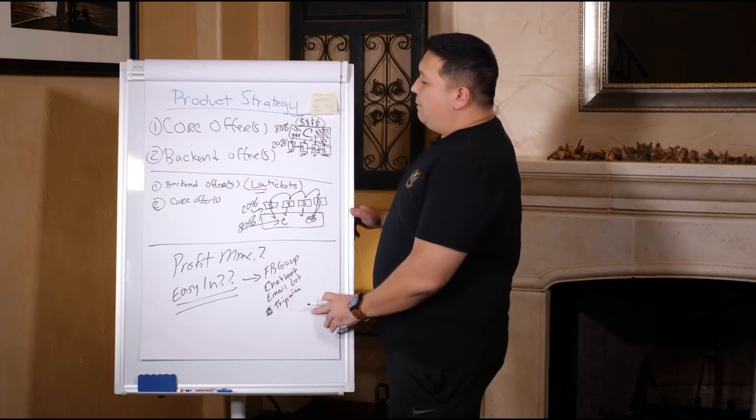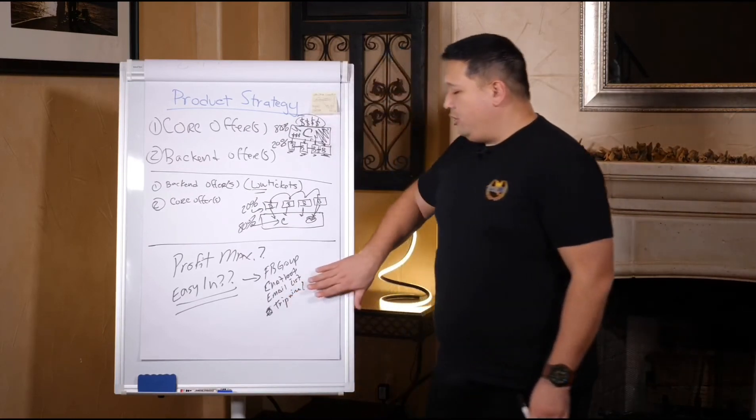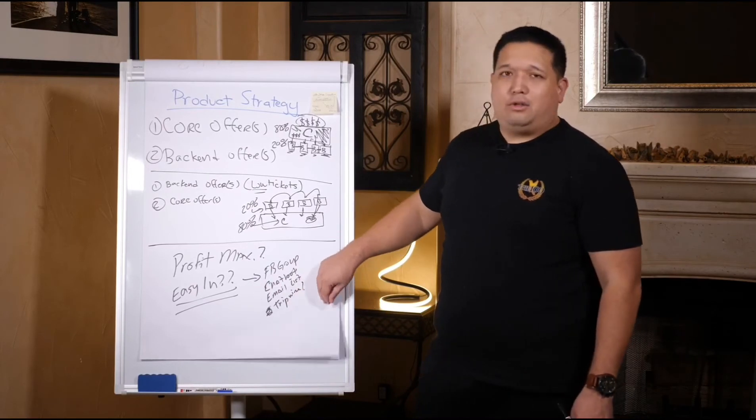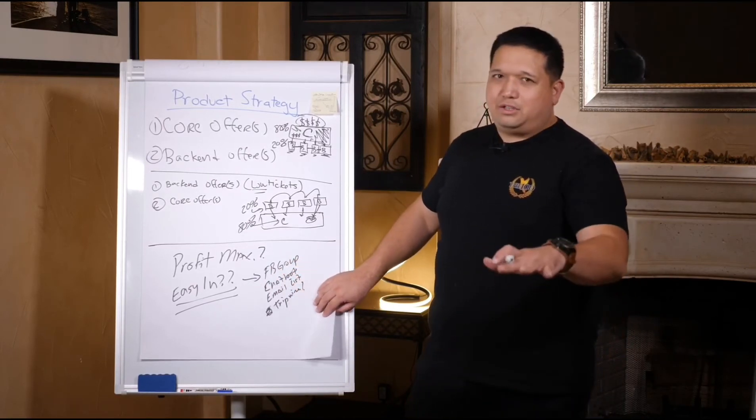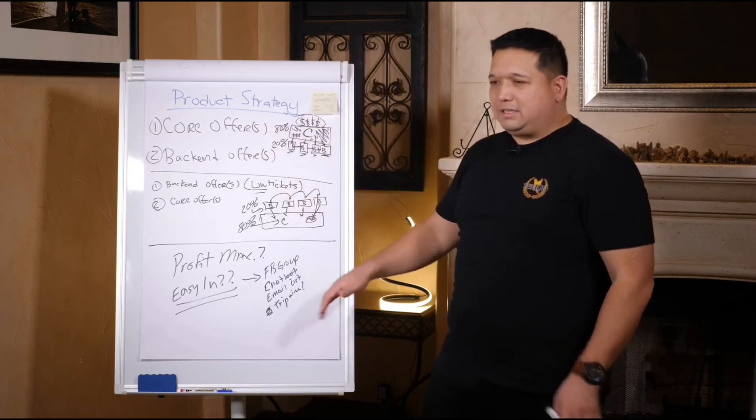No matter what, whether you do tripwires or not, you need to be able to get people on your list. So I'm going to talk to you a little about list and list diversification. It doesn't just mean email list. Anyway, so product strategy - this is the simplest way to think about it.